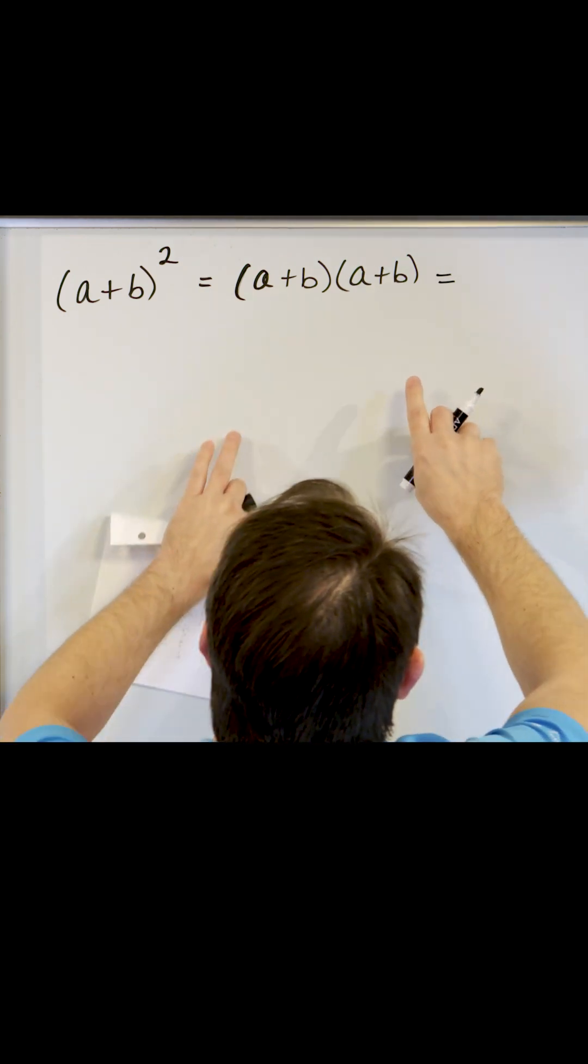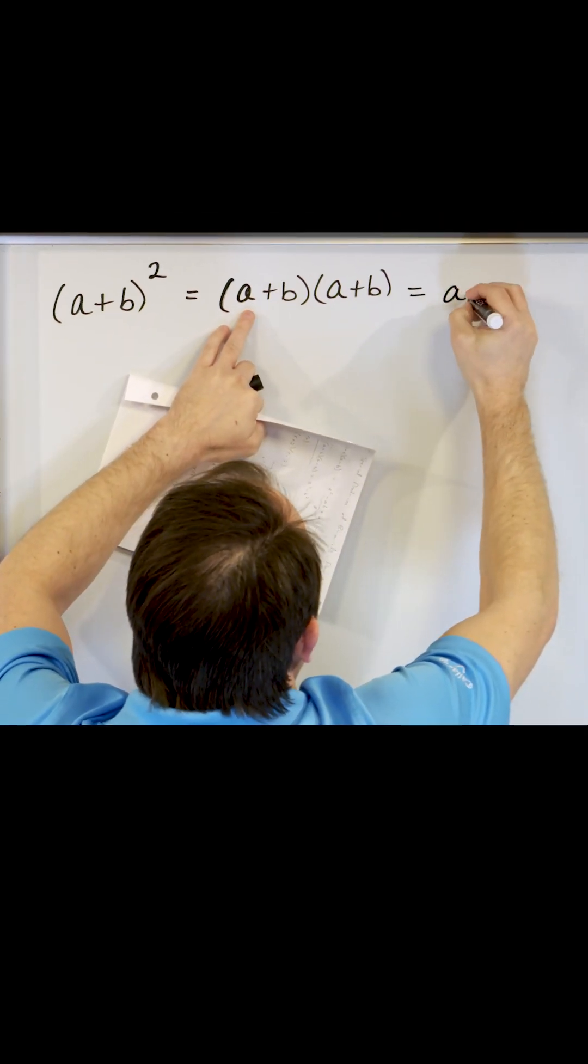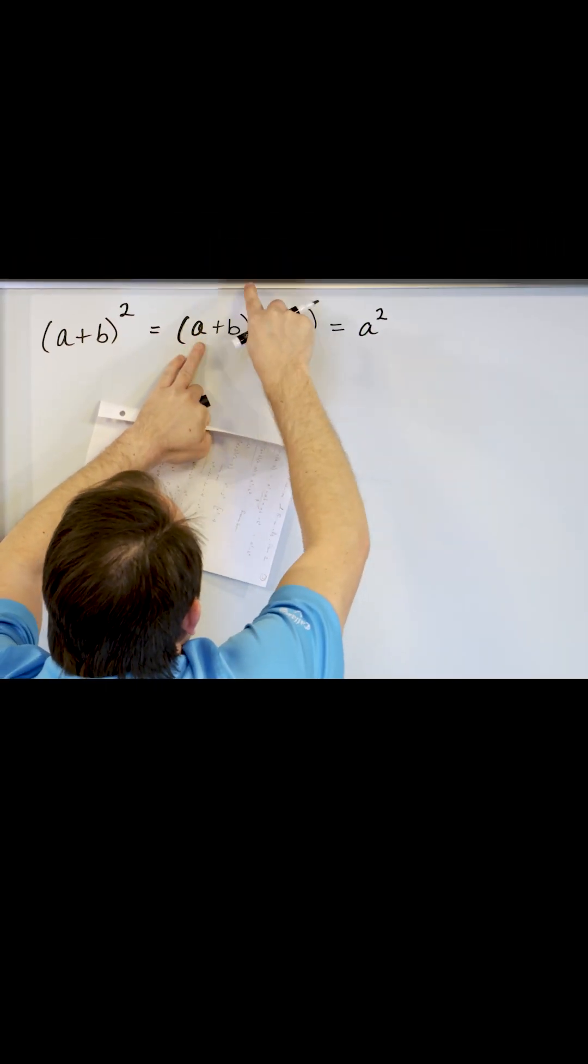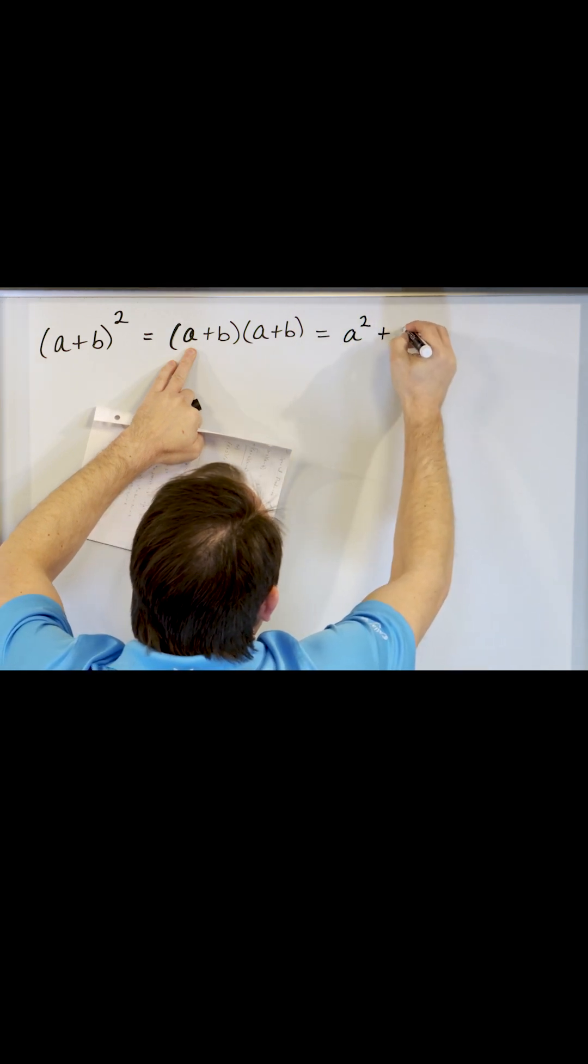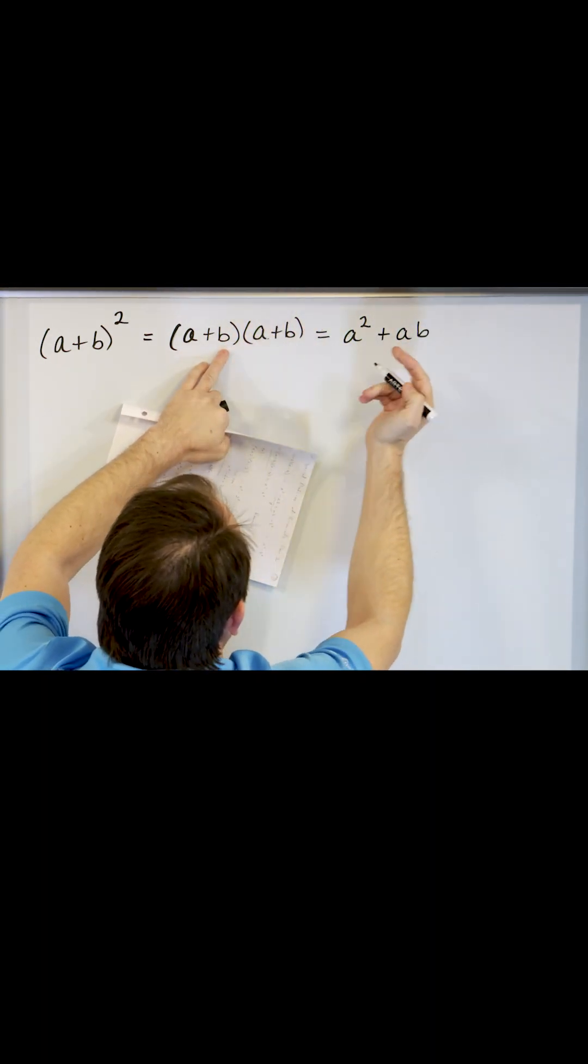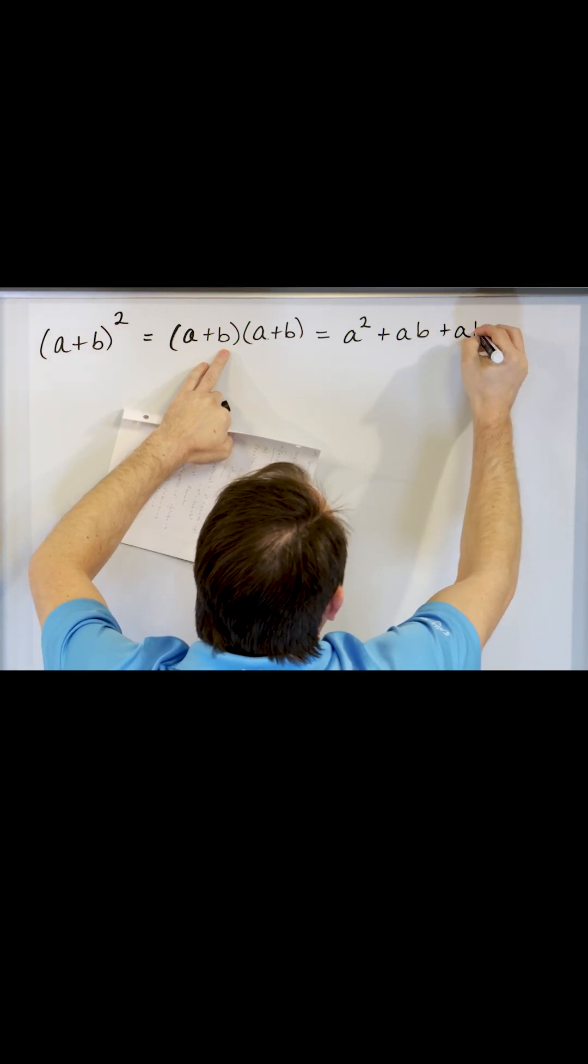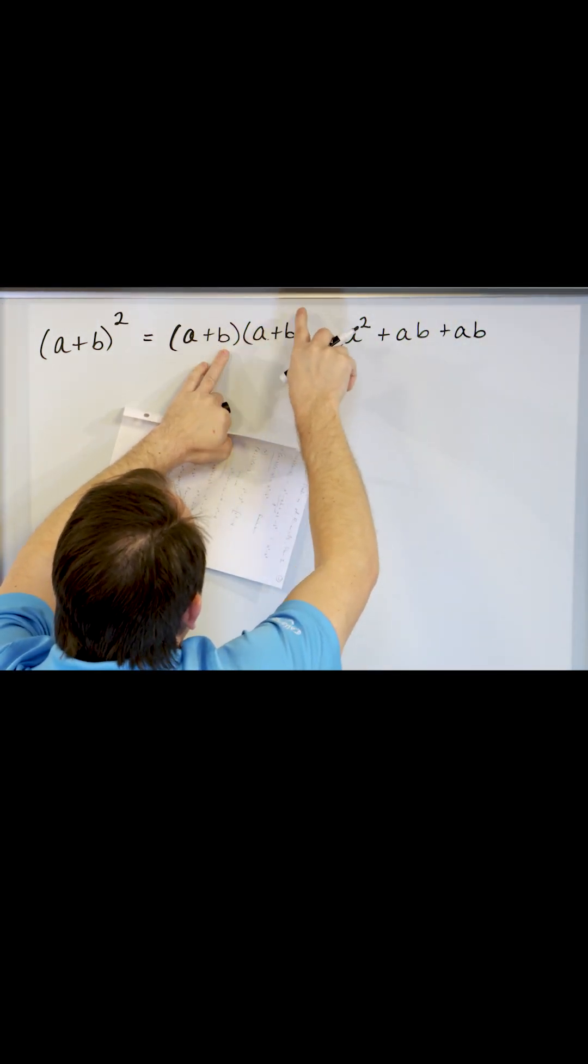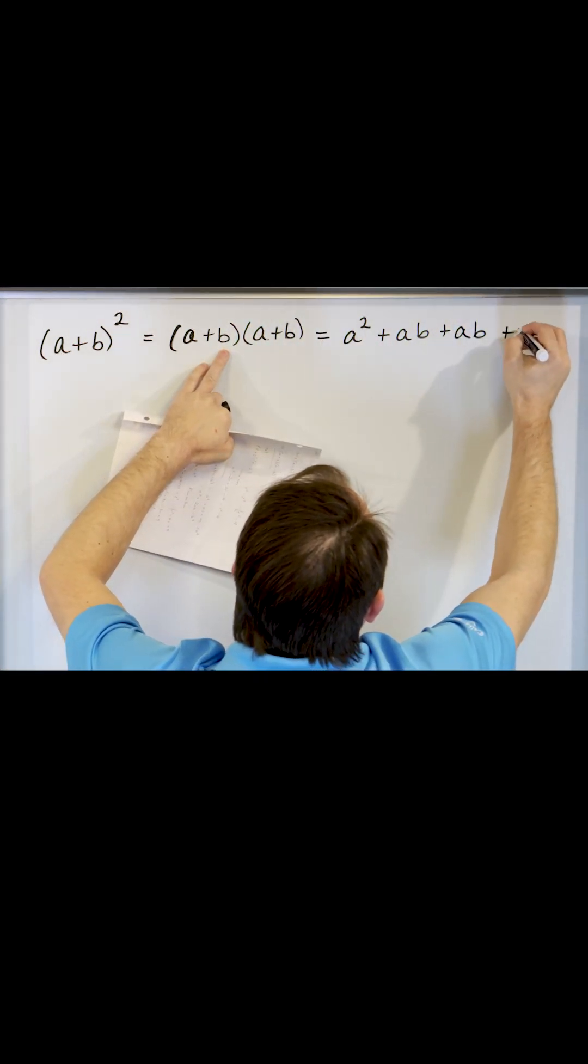So if we were just going to multiply everything out, it would be the first terms a squared and then distribute a times b giving me plus ab and then the inside terms would be ba but I'm going to write it backwards and make it ab so I can join it with this other term here and then distribute the b into the last term being b squared.